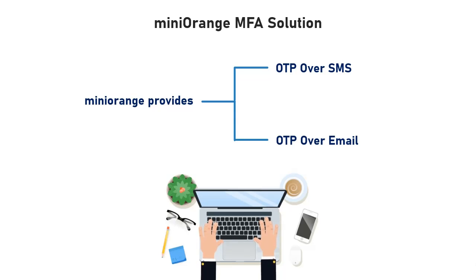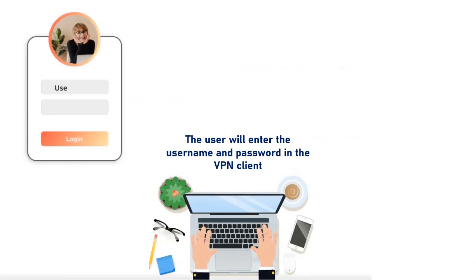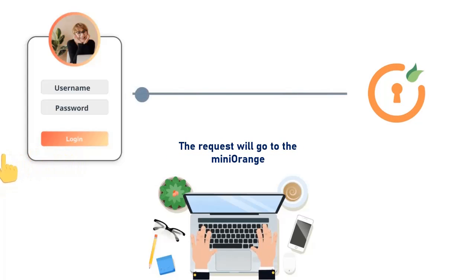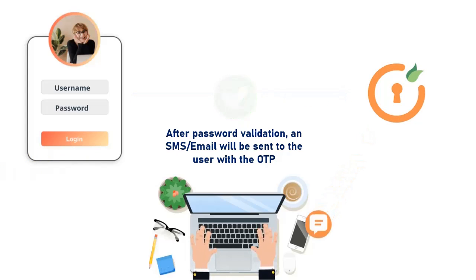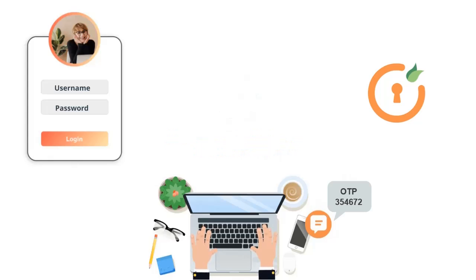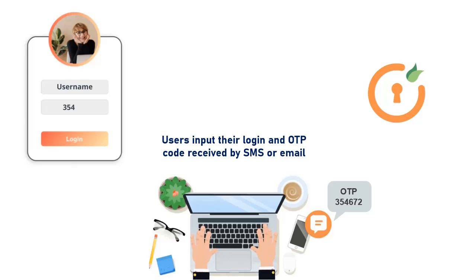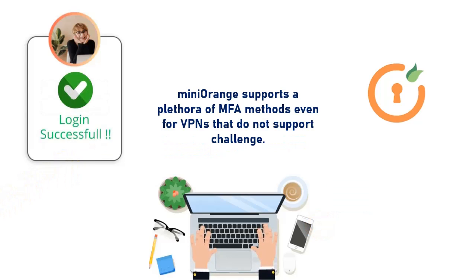For OTP over SMS and email, the user will be authenticated in two steps. The user will enter the username and password in the VPN client. The request will go to Mini Orange and after password validation, an SMS or email will be sent to the user with the OTP. The user then inputs their login and the OTP code received by SMS or email. In this way, Mini Orange supports a plethora of MFA methods, even for VPNs that do not support challenge.